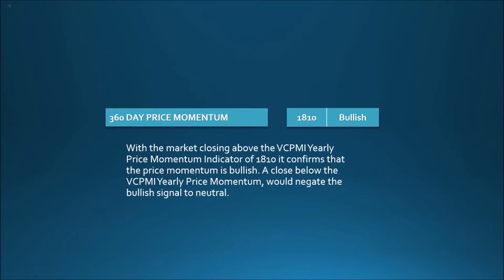360-day price momentum: 1810, bullish. With the market closing above the vcpmi yearly price momentum indicator of 1810, it confirms that the price momentum is bullish. A close below the vcpmi yearly price momentum would negate the bullish signal to neutral.